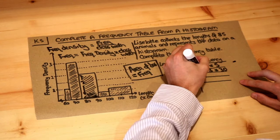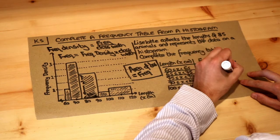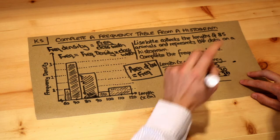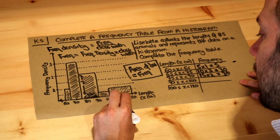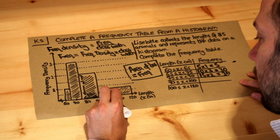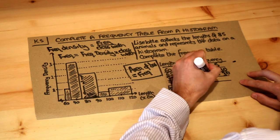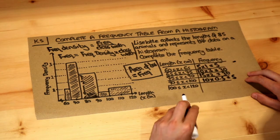90 to 100, that's a width of 10. The height of the bar we can see is 0.5, so 10 times 0.5 equals 5.